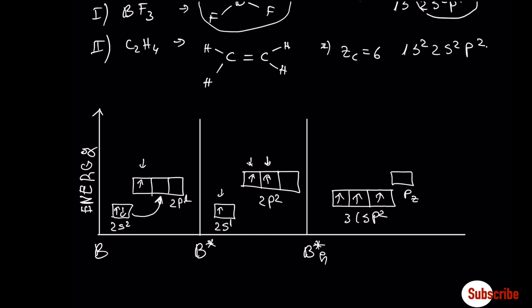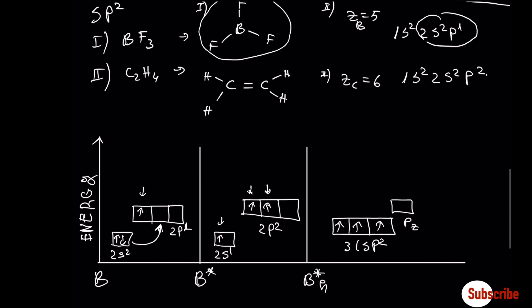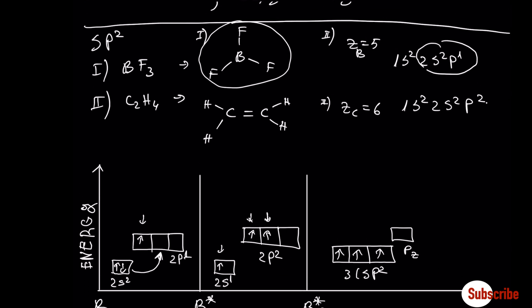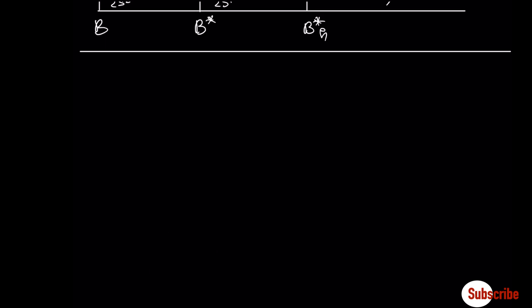We see here that boron uses only one s orbital and two p orbitals to create bonds. And one orbital from the p — because p has a maximum of three orbitals — remains empty. This is the reason why boron has an incomplete octet. It has one orbital empty. Let's move now to acetylene.